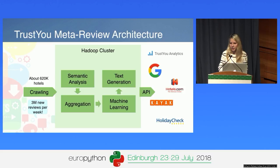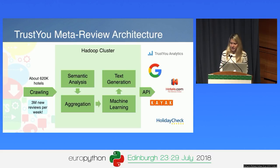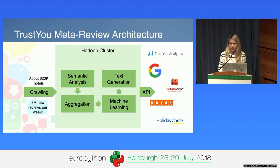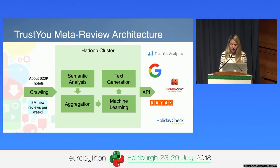For example, this part of the sentence refers to the bathroom, or this other part refers to the breakfast of the hotel. In addition to categorizing these parts of the sentences, we also compute a sentiment for them — was the sentence positive or negative? After this part, we basically aggregate this data and apply machine learning algorithms to it.